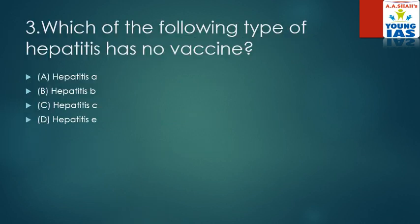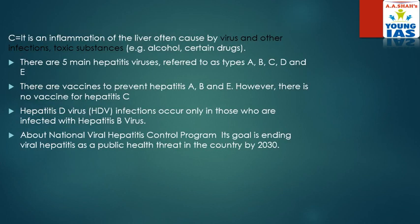Our next question is: which of the following types of hepatitis has no vaccine? Hepatitis is a virus which affects the liver. The answer is Hepatitis C, which does not have any vaccine. It is an inflammation of the liver often caused by a virus and other infections, toxic substances, alcohol, and certain drugs. There are 5 main types: Hepatitis A, B, C, D, and E. Among them, C does not have any vaccine. Our goal is to terminate hepatitis totally by 2030.